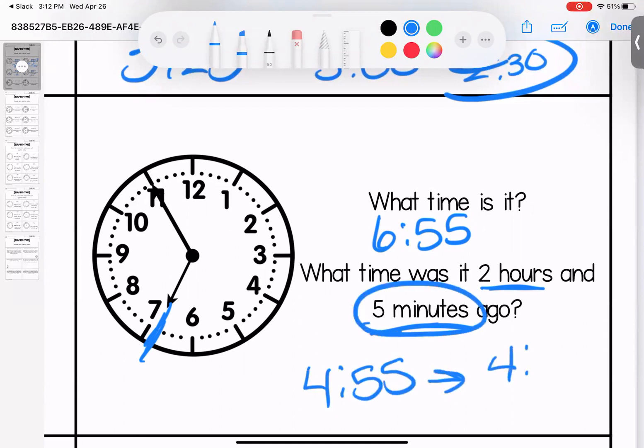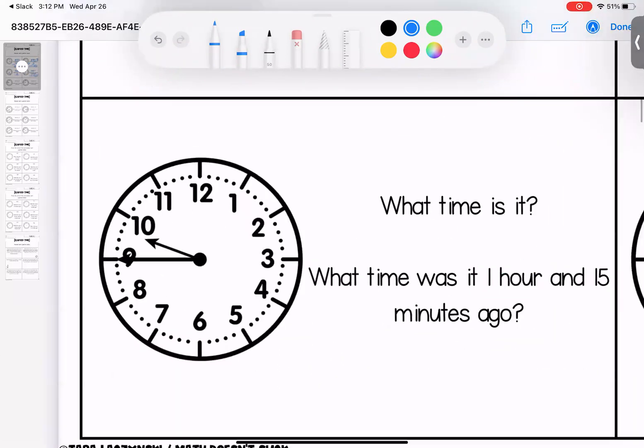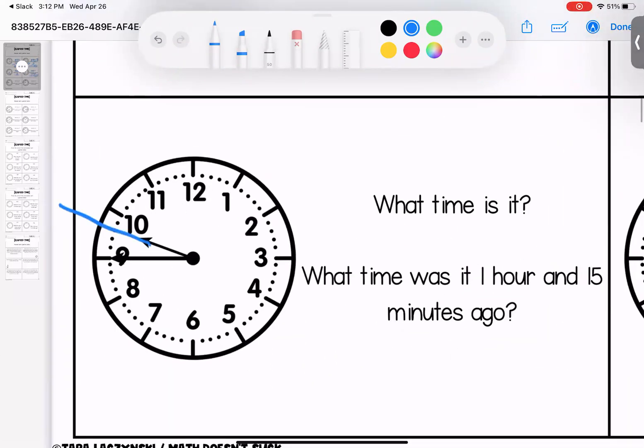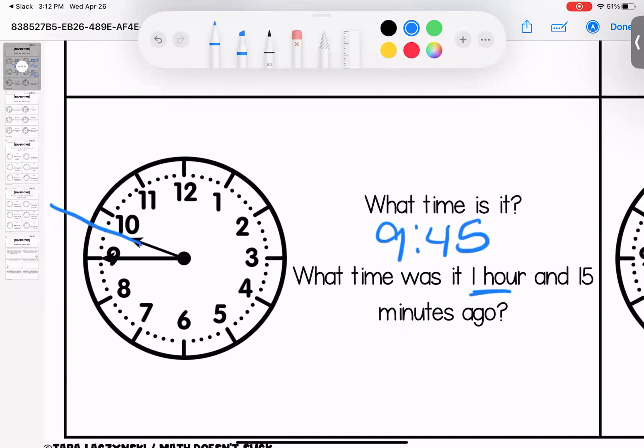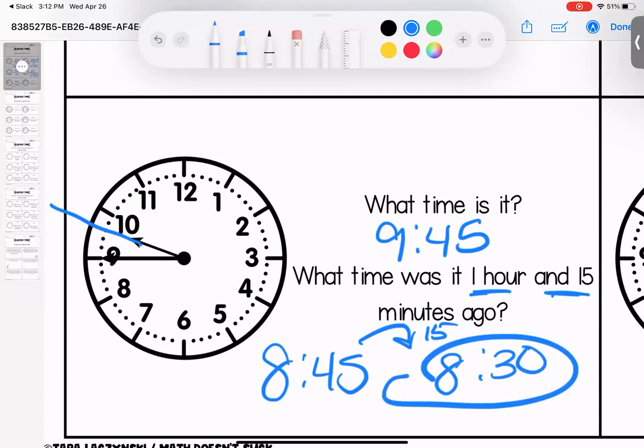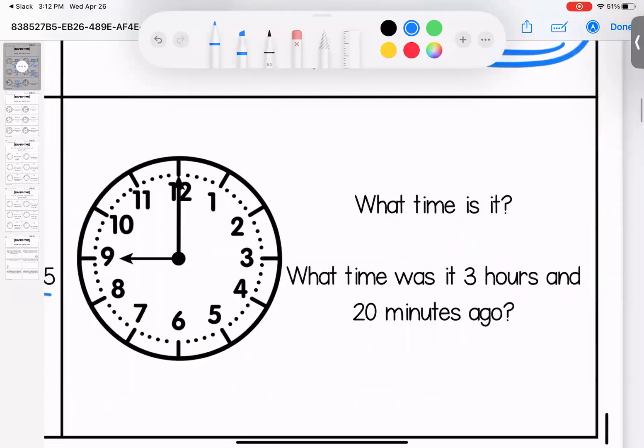What time is it? It is 9:45. What time was one hour and 15 minutes ago? Well one hour is 8:45, 15 minutes would be 8:30.